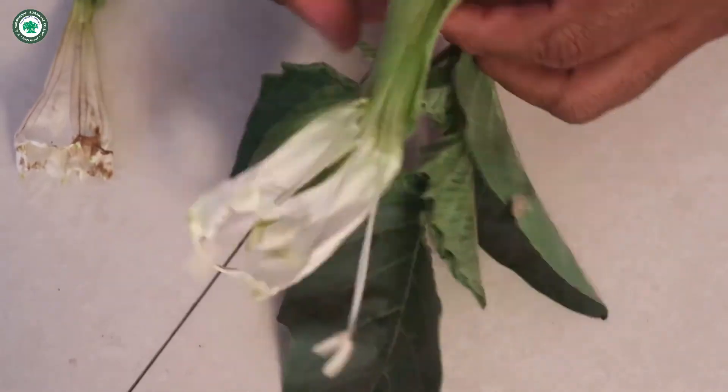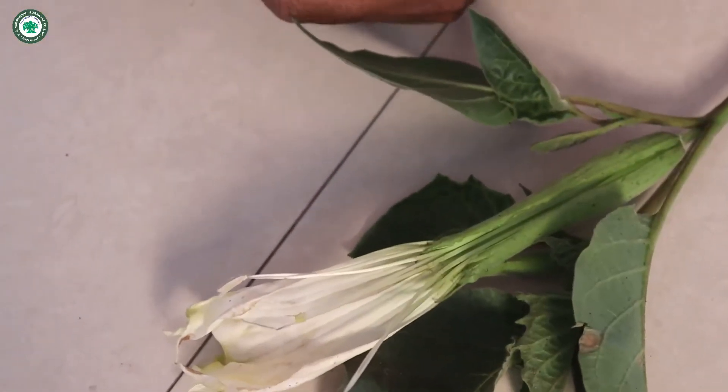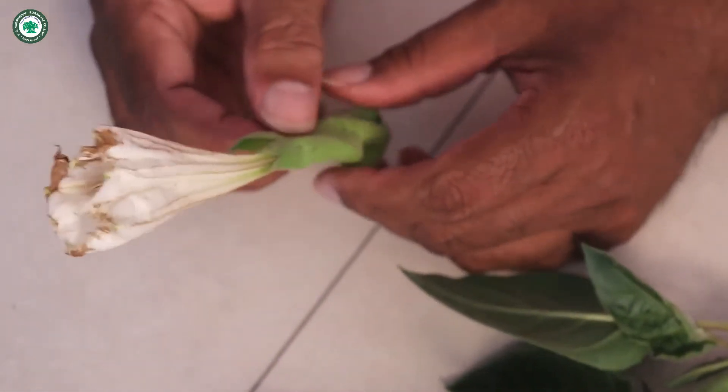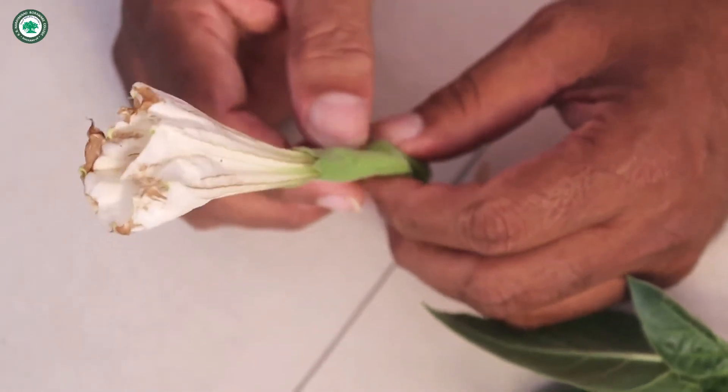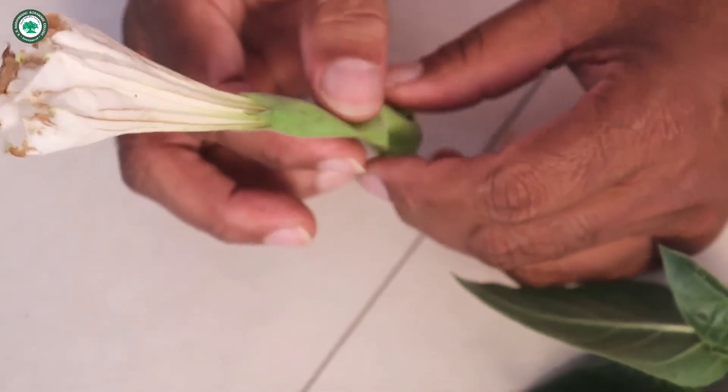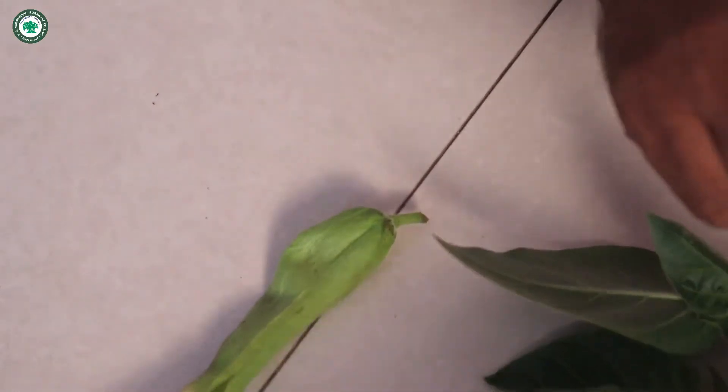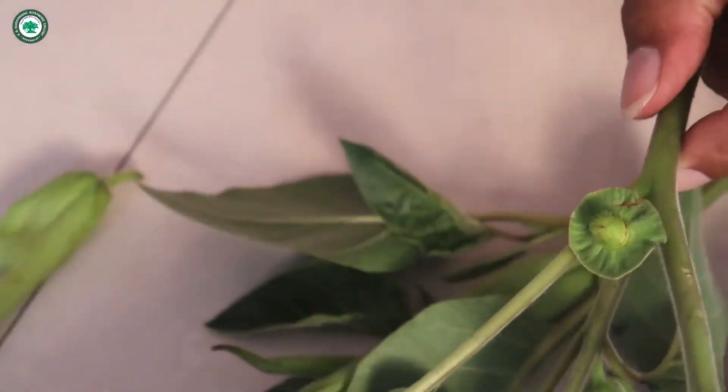Now the calyx. So this is the calyx. Now there are five sepals. Now this is the calyx. There are the five sepals. The gamosepalous is the condition, valvate aestivation and it is the persistent. That means it is also found on the fruit. So it is called as the persistent calyx.